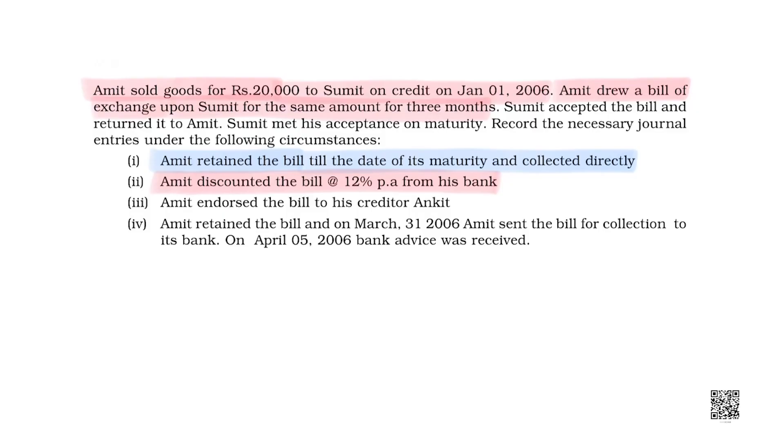But what if Amit feels like getting the money before that date? Is it possible? Yes, it is possible. In case the drawer falls in need of money before maturity, the drawer can approach a bank and the bank will give the money of that bill to the drawer. And on maturity, the bank will receive this money from the debtor, that is Sumit.